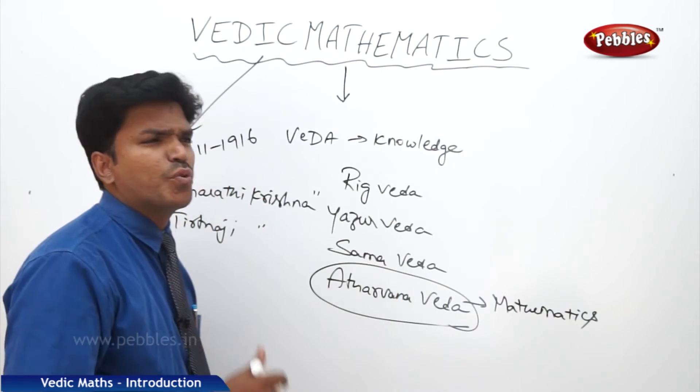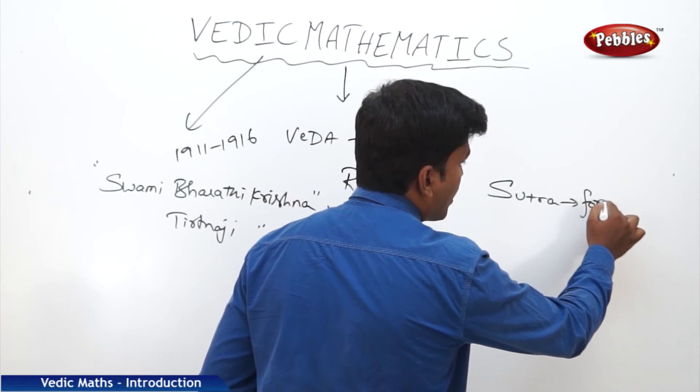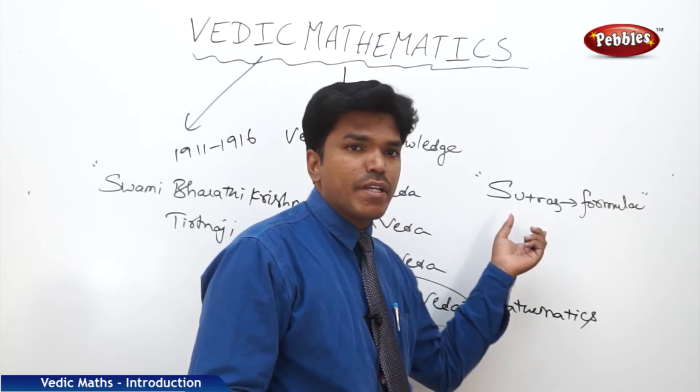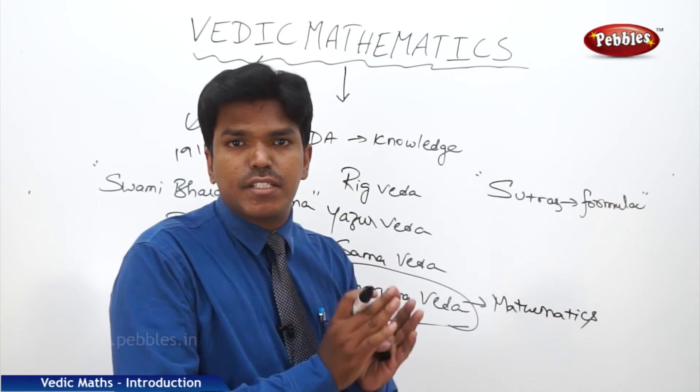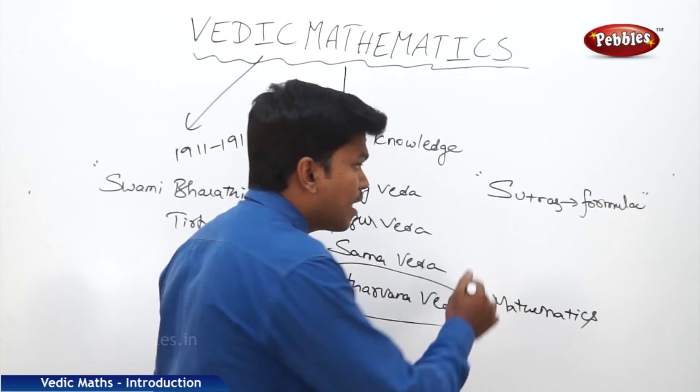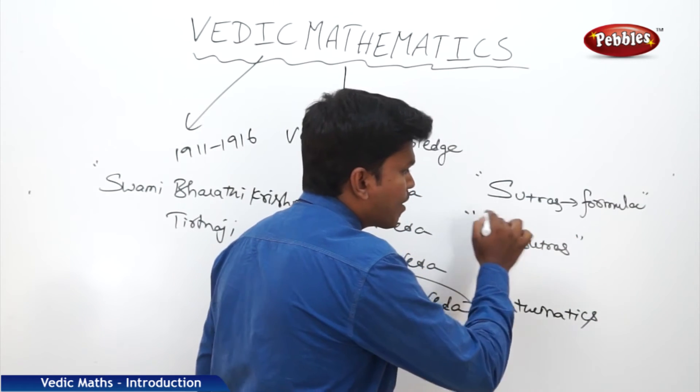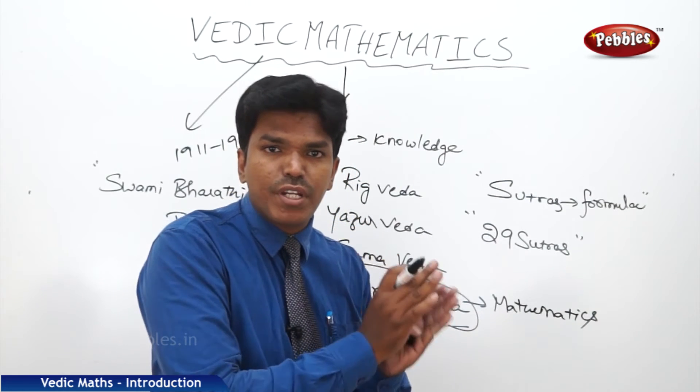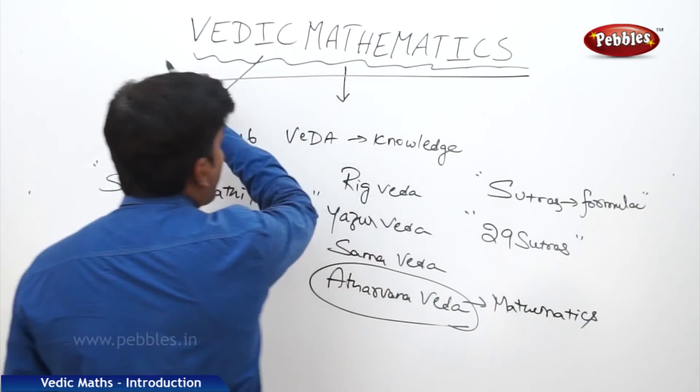Now, what do you mean by Sutra? Sutra is nothing but formulae. So what Swamiji did between 1911 to 1916, he went into deep meditation and he recollected 29 sutras, that means 29 formulas. And he gave a name to this concept, to these 29 sutras and their application as Vedic Mathematics.